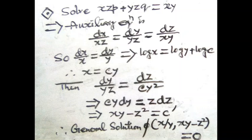Next, considering the second and third fractions, we get dy/(yz) = dz/(cy²), because in place of x we substitute cy. After cross multiplication, cy dy = dz, so integrating gives the solution xy − z² = c′, another arbitrary constant.